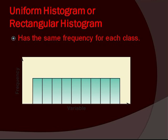A uniform histogram or rectangular histogram has the same frequency for each class.